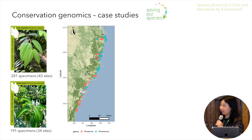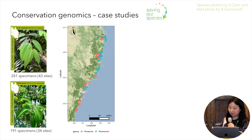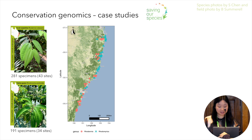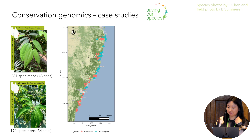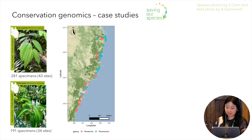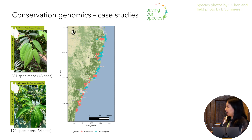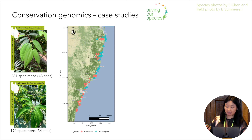I'm going to focus on Rhodamnia rubescens, the scrub turpentine, and Rhodomyrtus, the native guava, which were once widespread rainforest species along the east coast of Australia. These were sampled across New South Wales by Threatened Species Officer Craig Steen, who will go into detail about the monitoring and on-ground management of these two emergency species later in the conference.